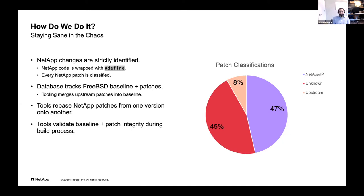We also have a bunch of tooling. We have a database that tracks our FreeBSD baseline plus the upstream patches we've cherry-picked on top of it. We have tools to help rebase our NetApp patches from one version to another, and we have tools that validate that the baseline and upstream patches we've cherry-picked are the only things in the file. We don't want other content to sneak into the source code untracked, because when it's time to merge forward it can become a big problem. We do have a very robust and mature development infrastructure within NetApp, which we rely on heavily in our development process for FreeBSD — whether it's build infrastructure or testing infrastructure.